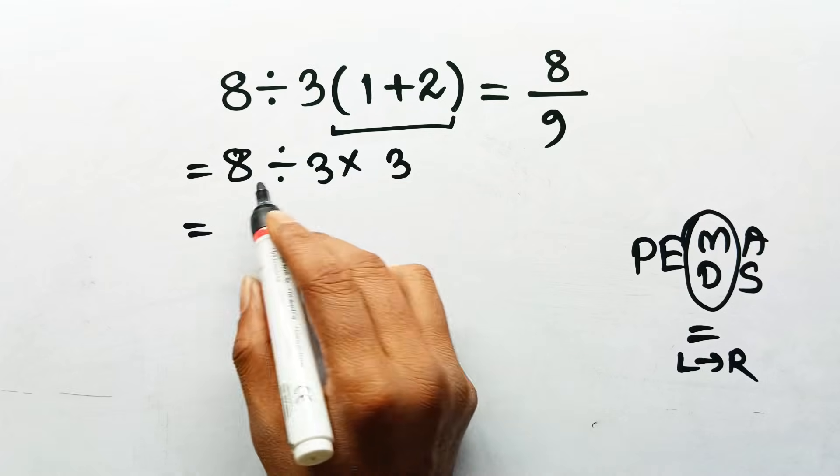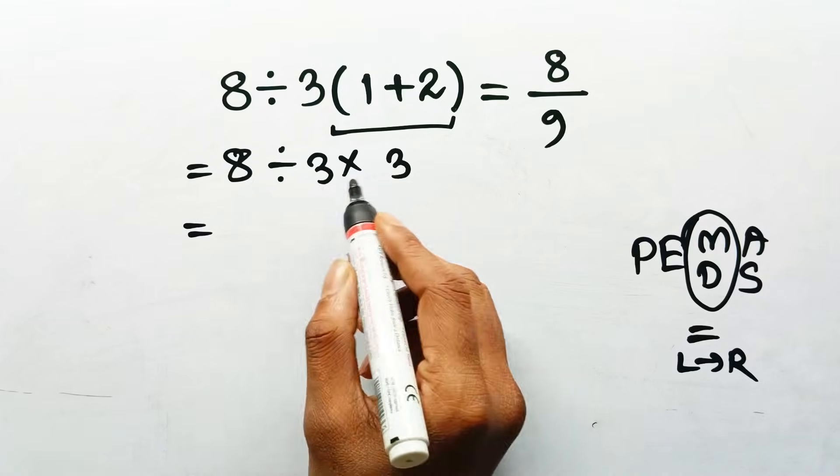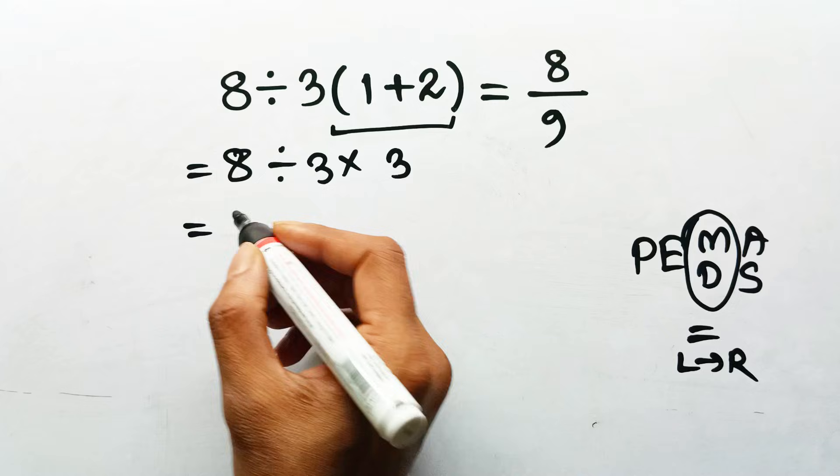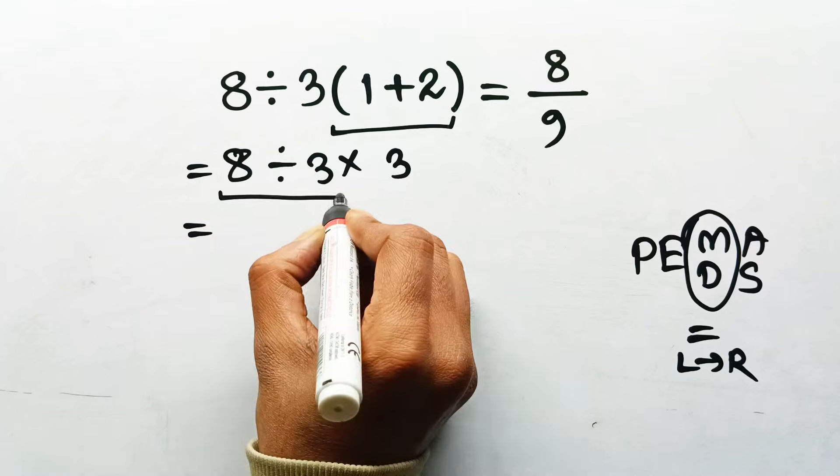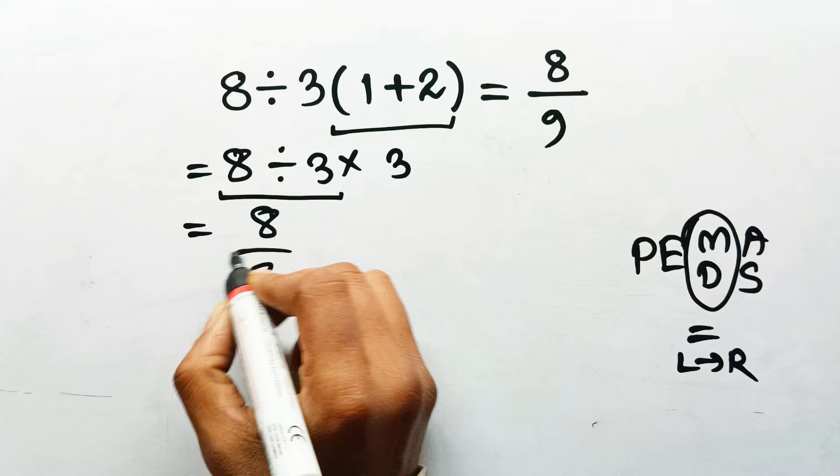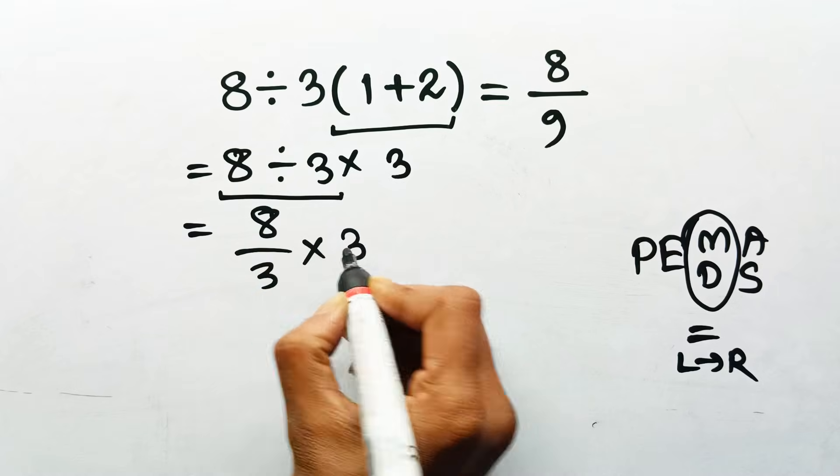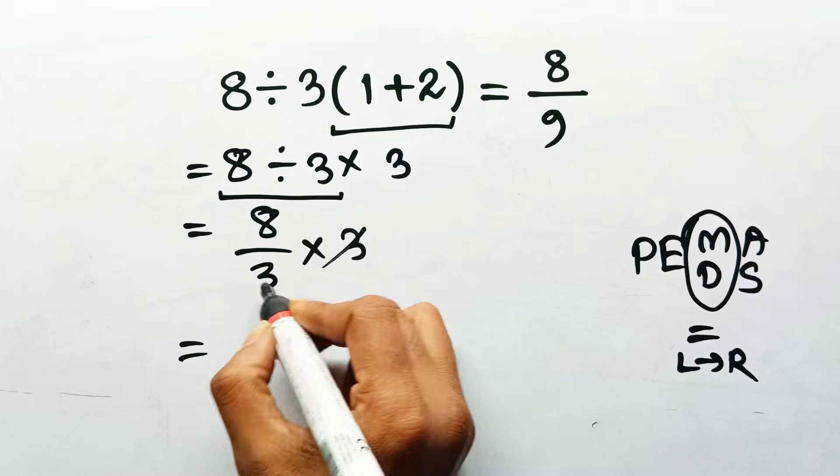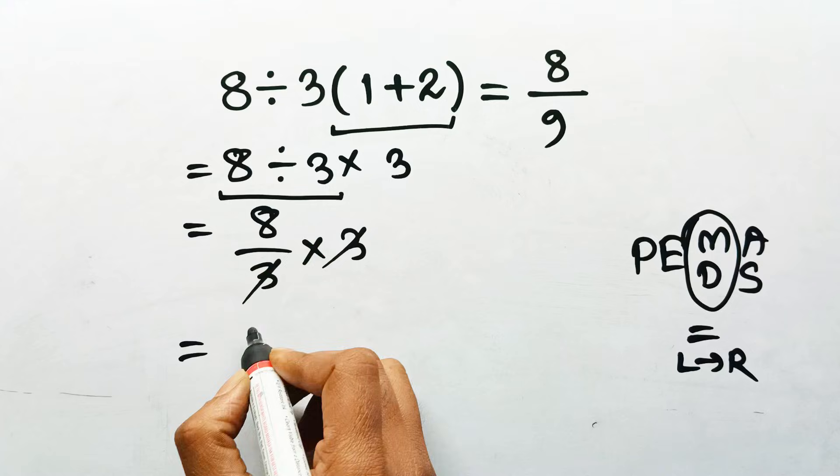Now we're in the multiplication and division phase. And since they're equals, we move left to right. First step? 8 divided by 3 equals 8 over 3. Next step? 8 over 3 times 3. Those 3's cancel nicely. And what do we get? 8.